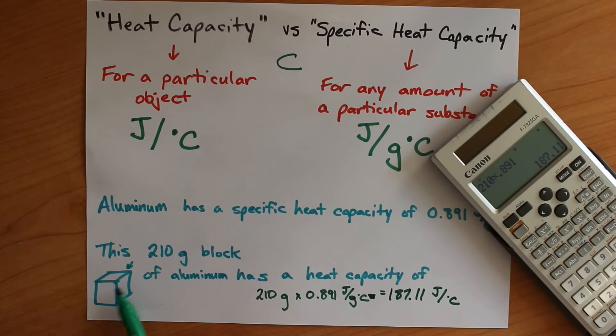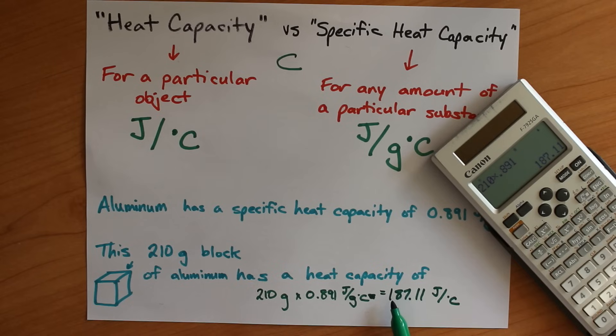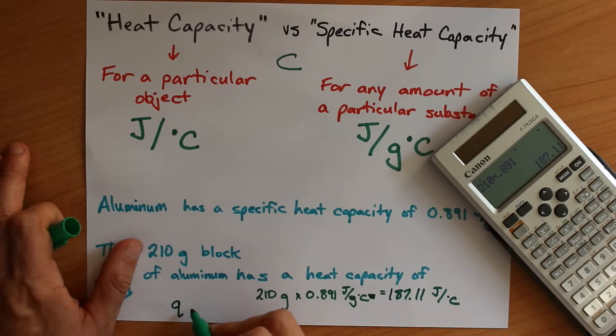So if this block goes up by a degree Celsius, we know it required 187.11 joules. Now we know that aluminum has that specific heat capacity, but for this particular block, we can use this number and a formula that's really similar.